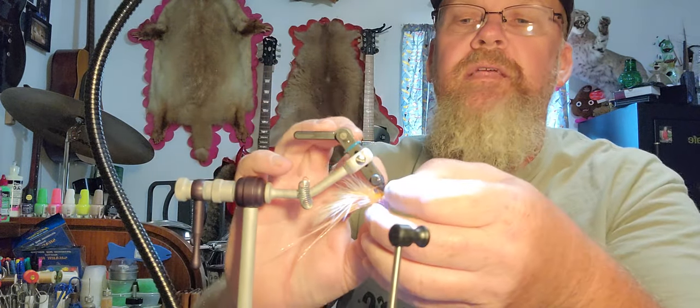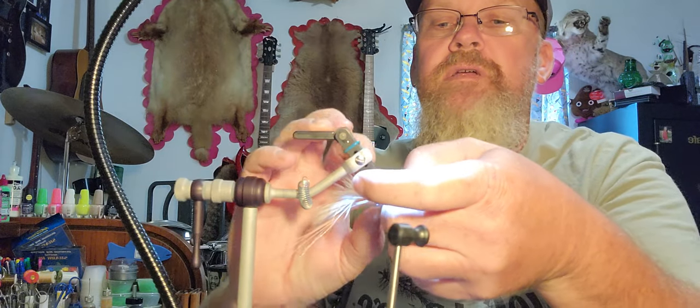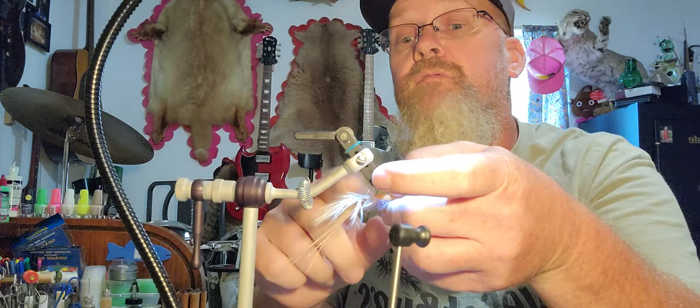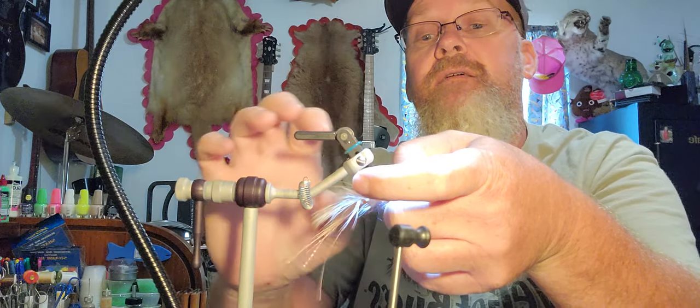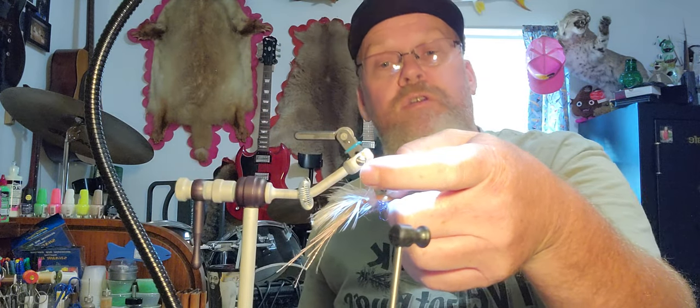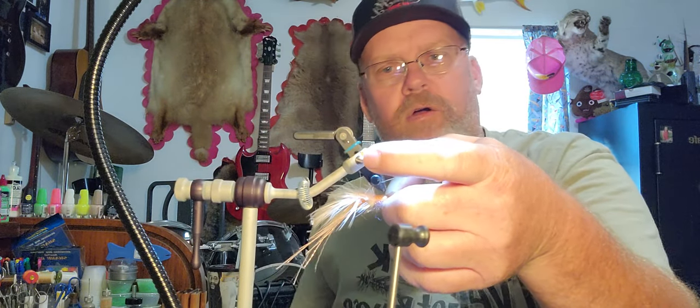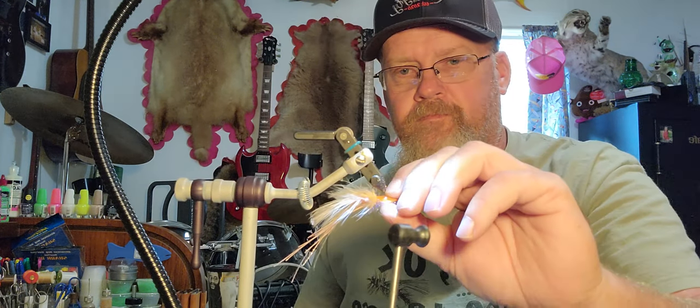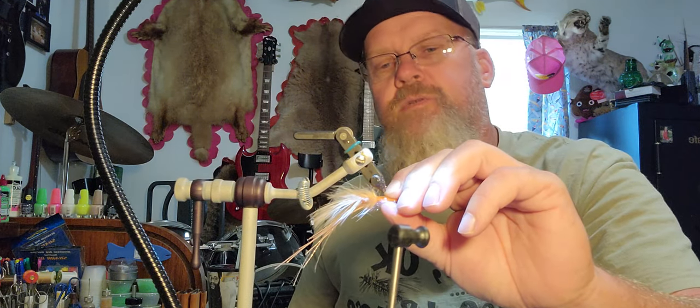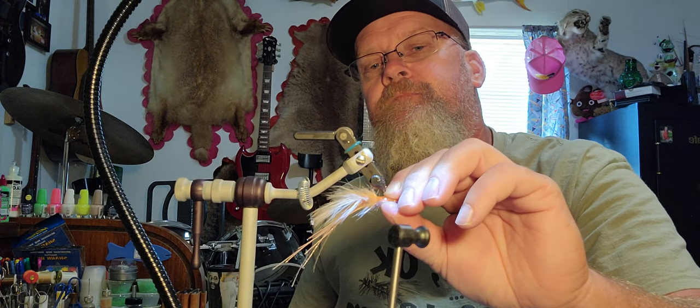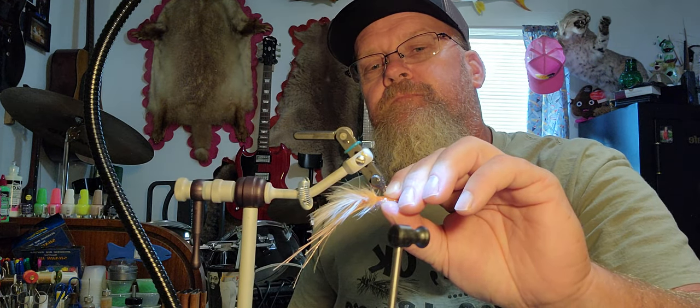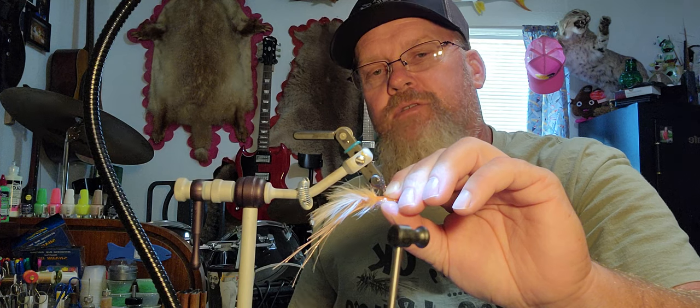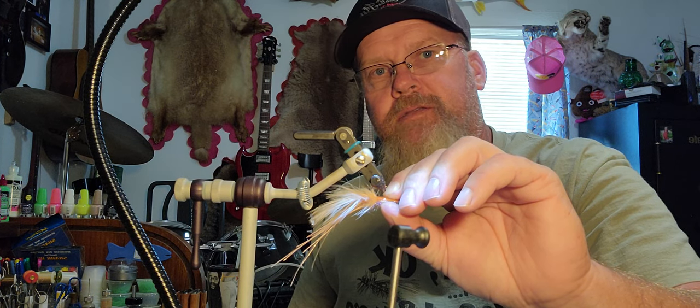I'm going to take the pointy end and put it towards the eye of the hook. I'm going to push that down and that is going to really resemble the body of a crayfish or shrimp or whatever, the hard shell of one. Squeeze that down.